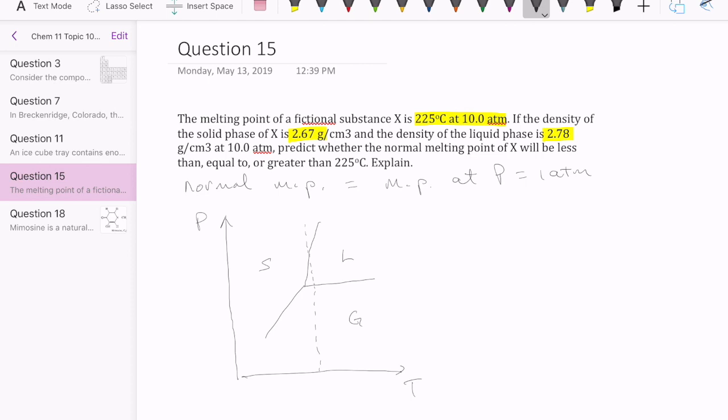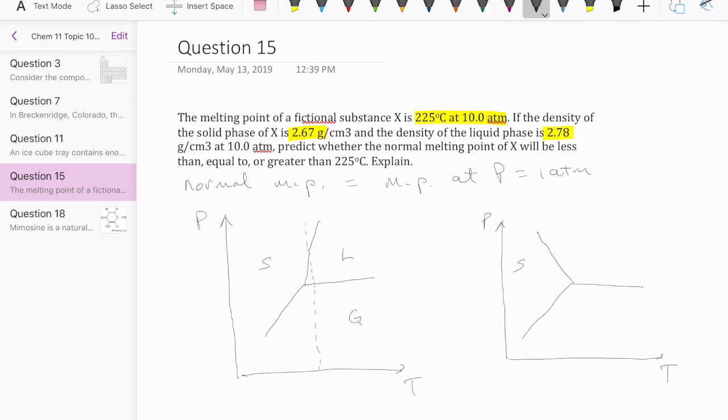However, in our question, they tell us that the liquid is actually more dense. So if the liquid is more dense, the phase diagram changes slightly. It now looks like this. When I increase pressure, the liquid actually becomes the densest phase. The solid converts to liquid at higher pressure, which means that the liquid is denser than the solid. This is important to help us answer this question.